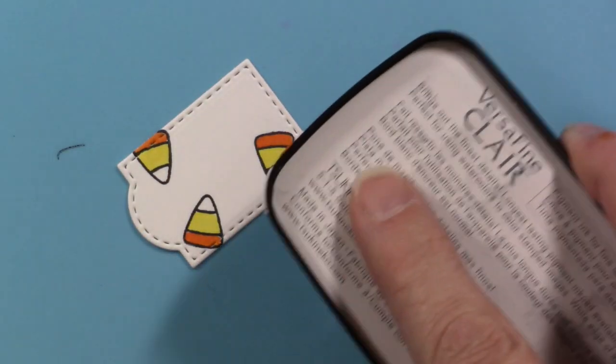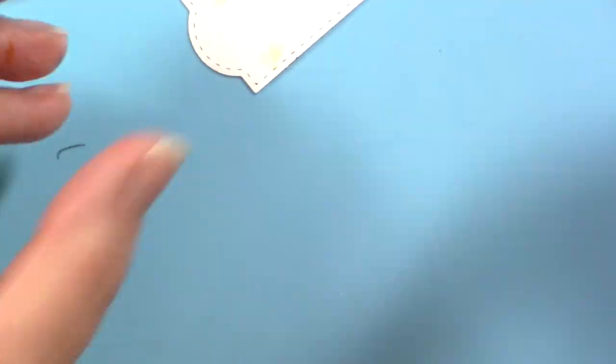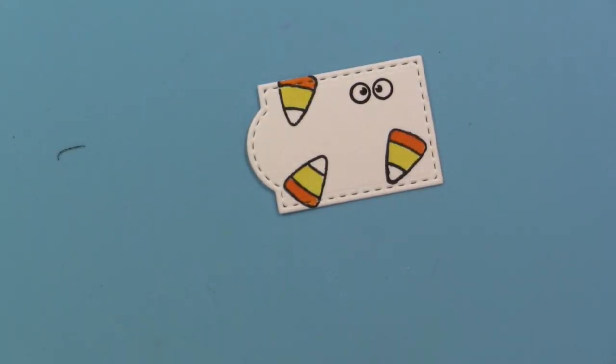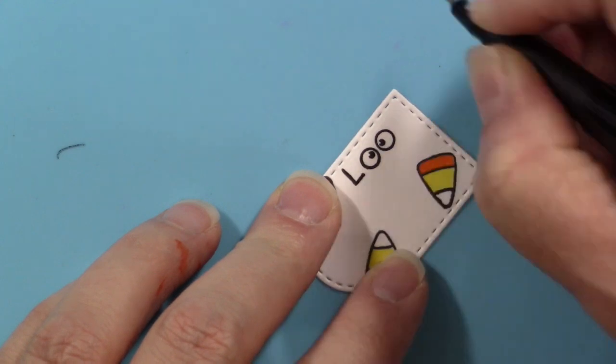Again I get that cute little stamping block out. I'm going to use my VersaFine ink to get a nice clean stamp here and stamp those little eyeballs on there, then add an L and a K around each side of them to make the word 'look.'